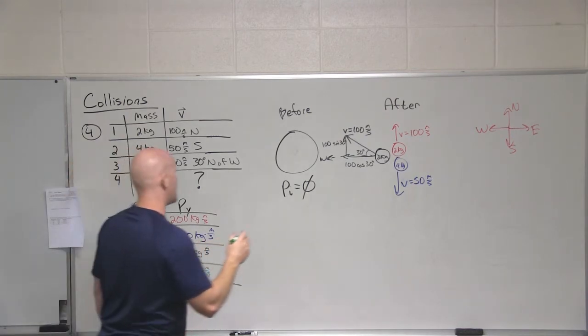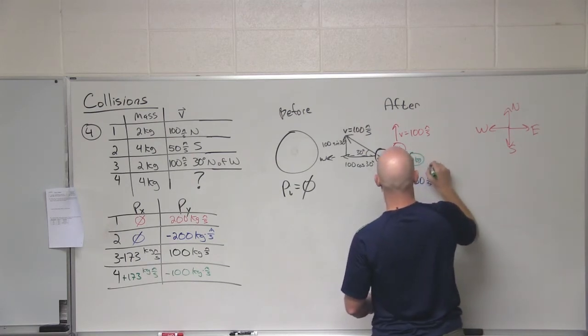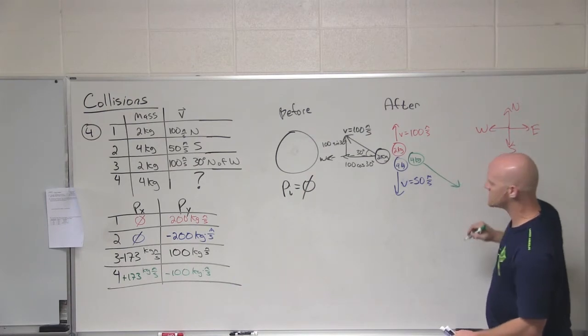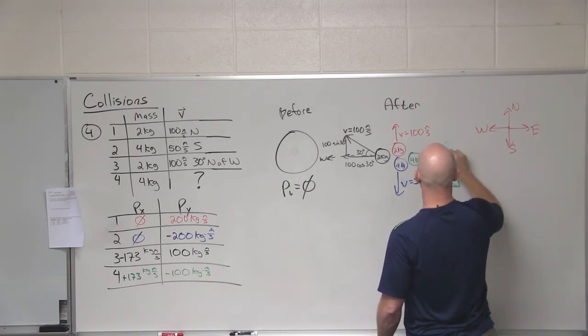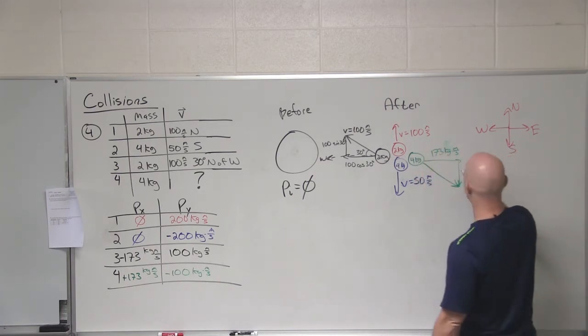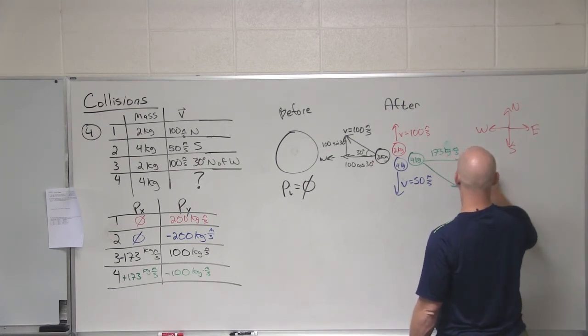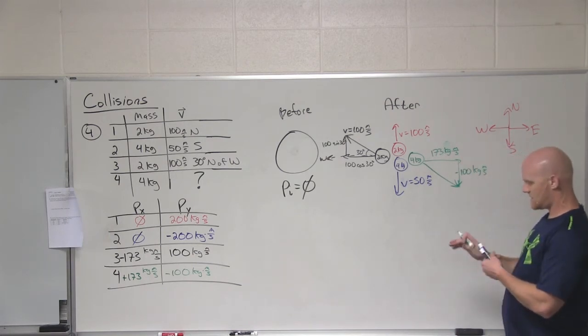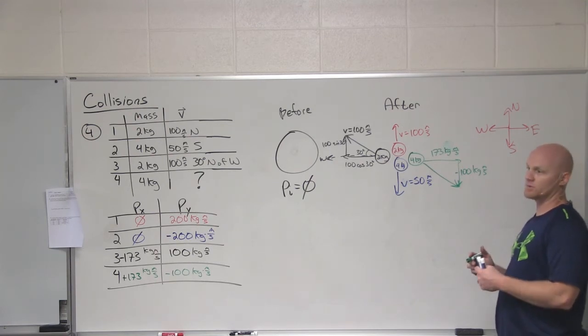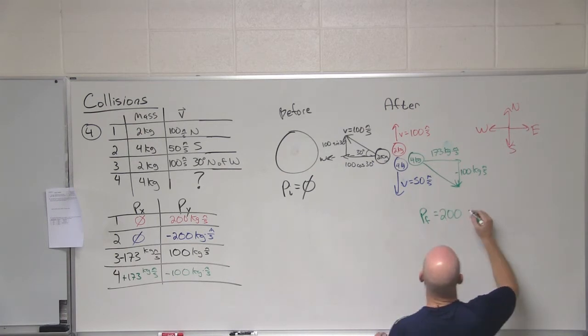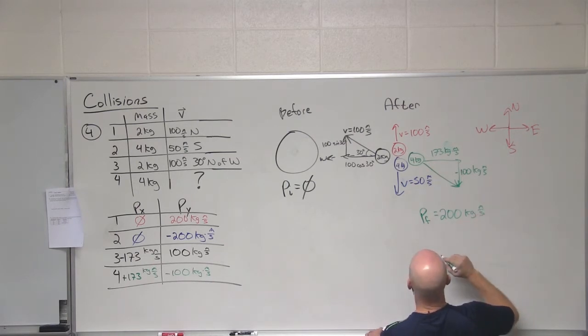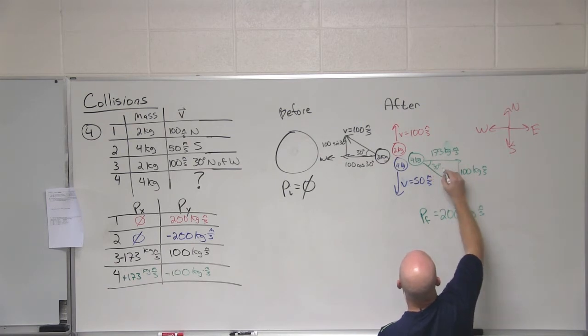So let's map this out then. So fragment number four has a mass of four kilograms. And in this case, we can see that it has to move somewhere down in this direction. So in this case, what is its overall momentum? What is the magnitude of its overall momentum? I should say. Kilogram meters per second. And what angle? 30 degrees south of what? South of east. Good. South of east is that direction. Fantastic.